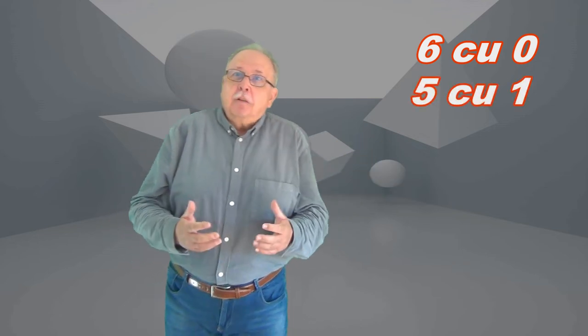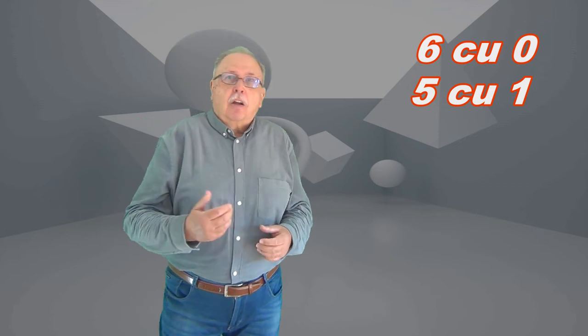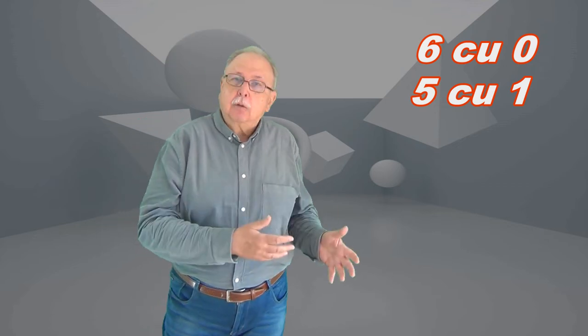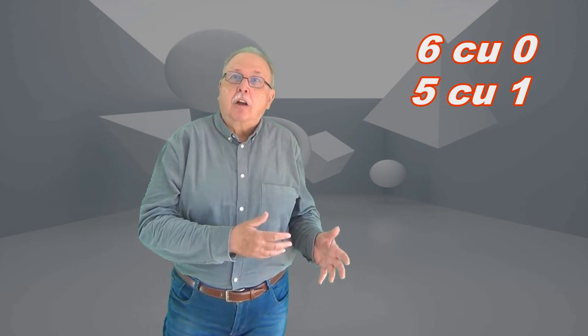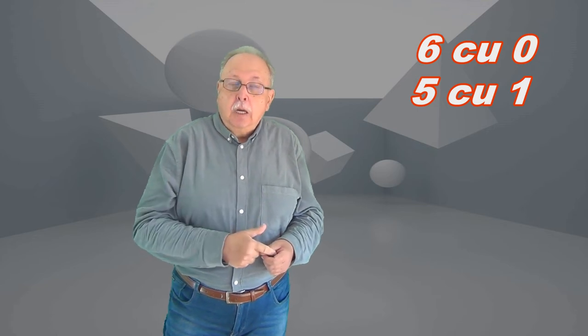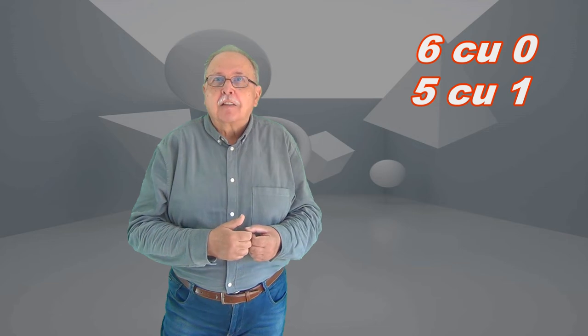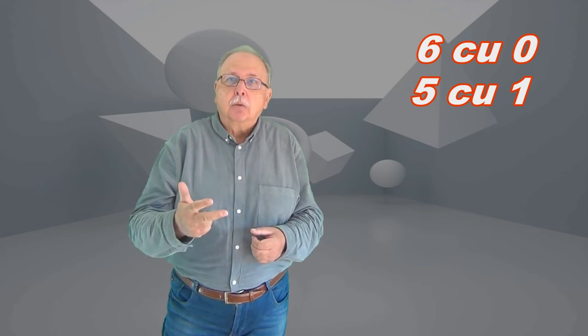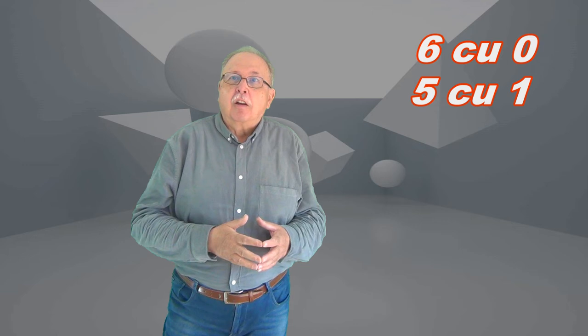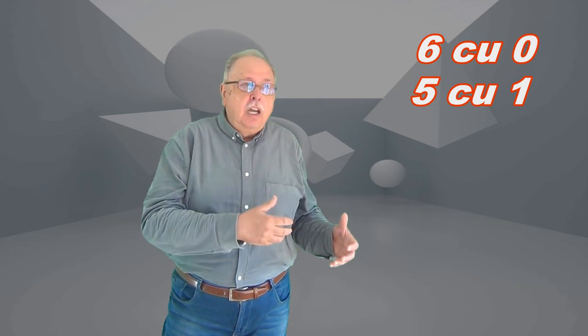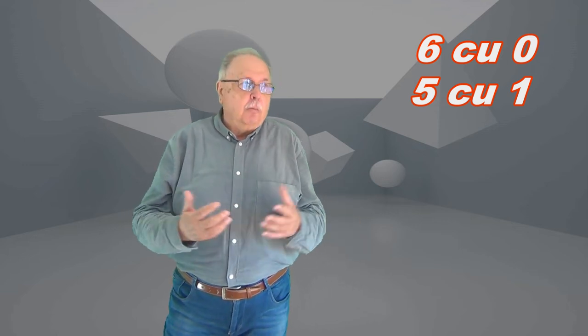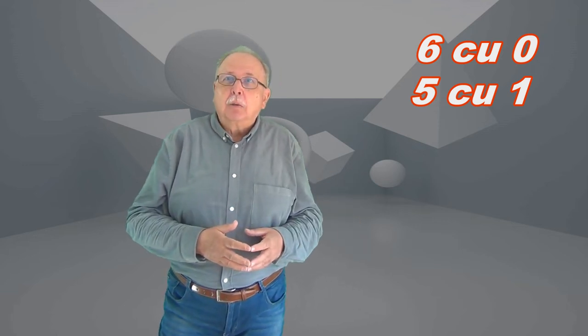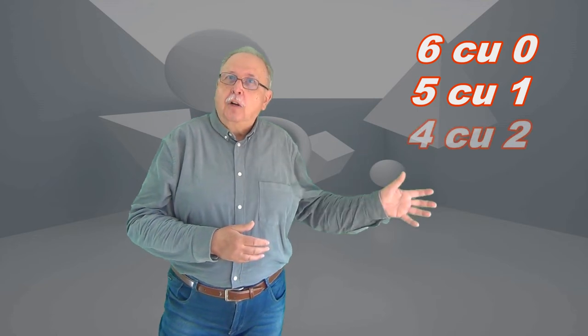Mai departe, care sunt persoanele cu care n-a dat mâna persoana patru? Partenerul ei și persoanele care a spus zero, respectiv unu. Atunci toate celelalte persoane au dat mâna cu cel puțin trei persoane. Persoanele șase, cinci și patru. Iar asta înseamnă că persoana care a dat răspunsul doi nu poate fi decât partenerul sau partenera persoanei patru. Așa că mai avem o pereche.